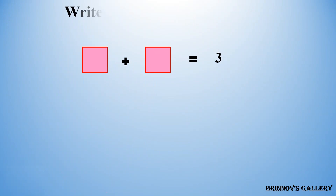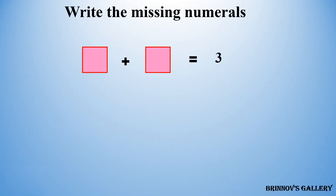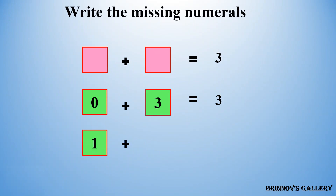Write the missing numerals. 0 plus 3 is equal to three, or we can also have one plus two is equal to three. We can choose any option from these possibilities to fill the missing numerals.